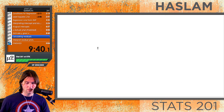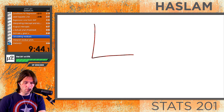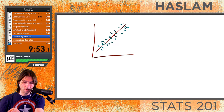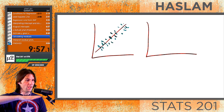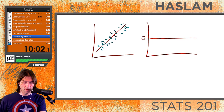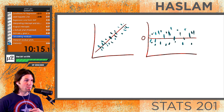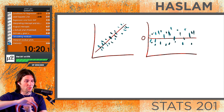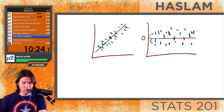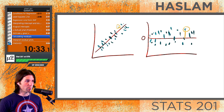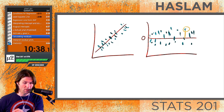To create a residual plot, we take the scatter plot with its line and make the line flat. Anything on the line has a residual of zero because the residual is how much the line misses by. The vertical distance from each point to the flat line is that point's residual. This gives us a very good residual plot showing how much we miss by at each point.